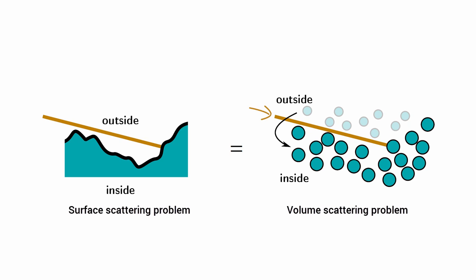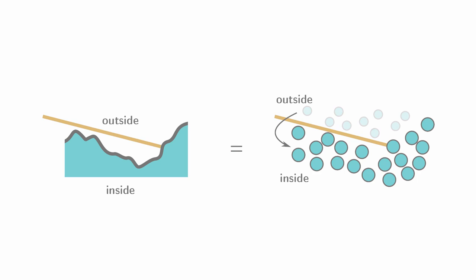The first one is the free path distribution, which tells us how long a ray can travel in a medium before finding an intersection. On the microsurface, the equivalent question is what is the height of the next intersection?